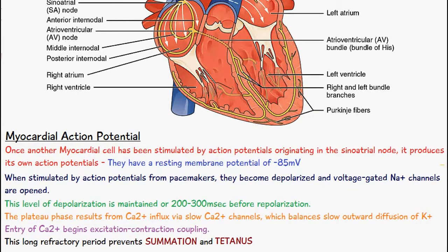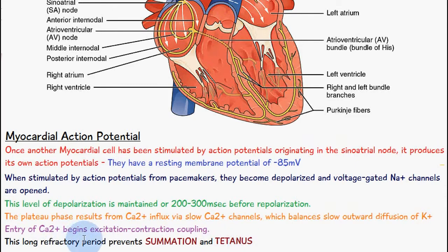This plateau phase results from calcium ion influx via slow calcium ion channels, which balances the slow outward diffusion of potassium ions. The entry of calcium ions begins excitation-contraction coupling, which allows the myocardial cells to contract.